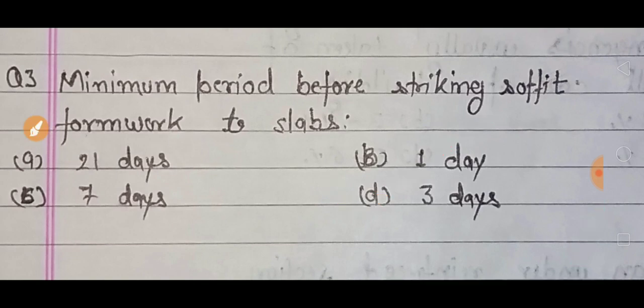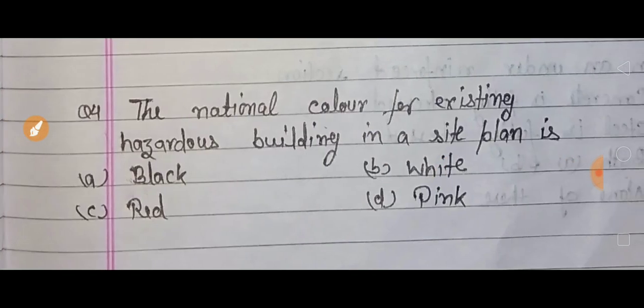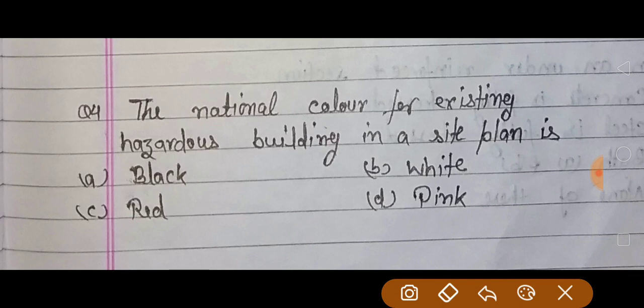Next question: the national color for existing hazardous building in a site plan is? Site plan में जो पहले से ही कोई hazardous building बनी हुई है, उसको किस color से दर्शाया जाता है? तो इसका right answer होता है black.